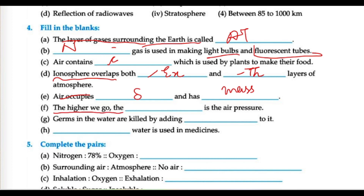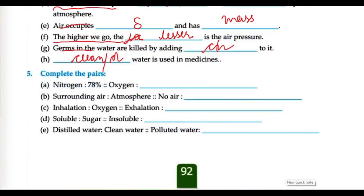The higher we go, the air pressure is lower — lesser the air pressure. Germs in water are killed by adding chlorine to it. Water used in medicine is distilled — distilled means clean water.